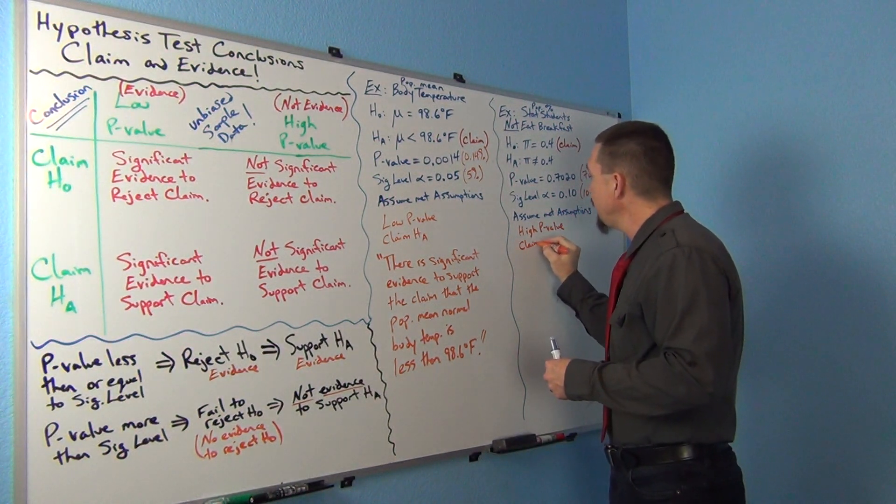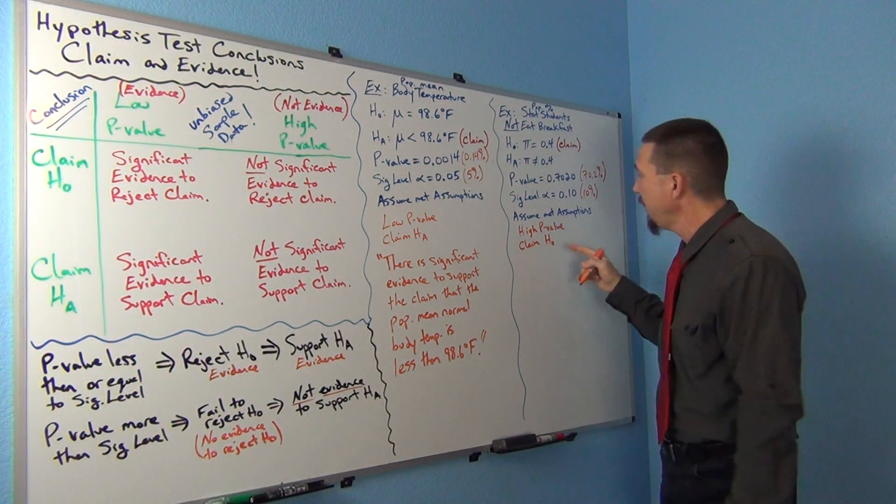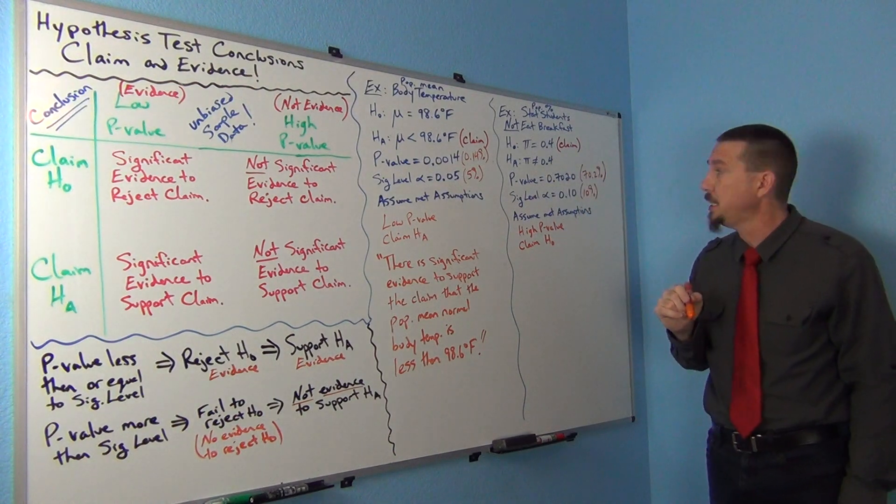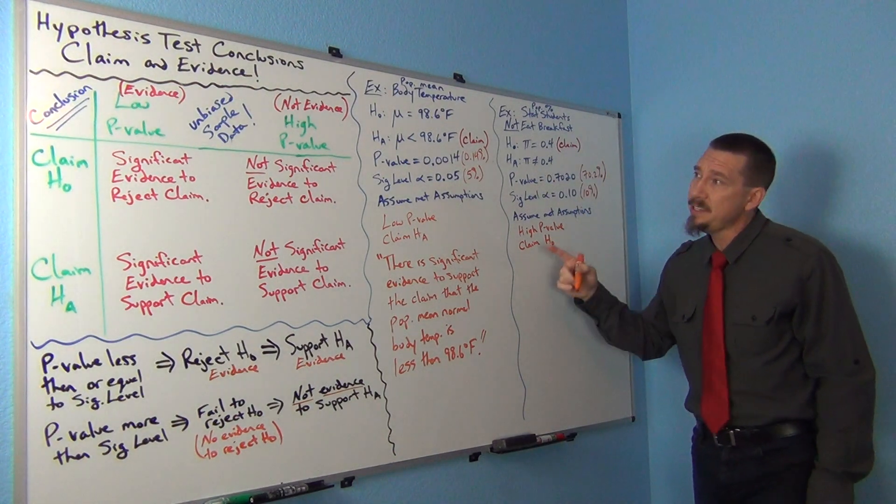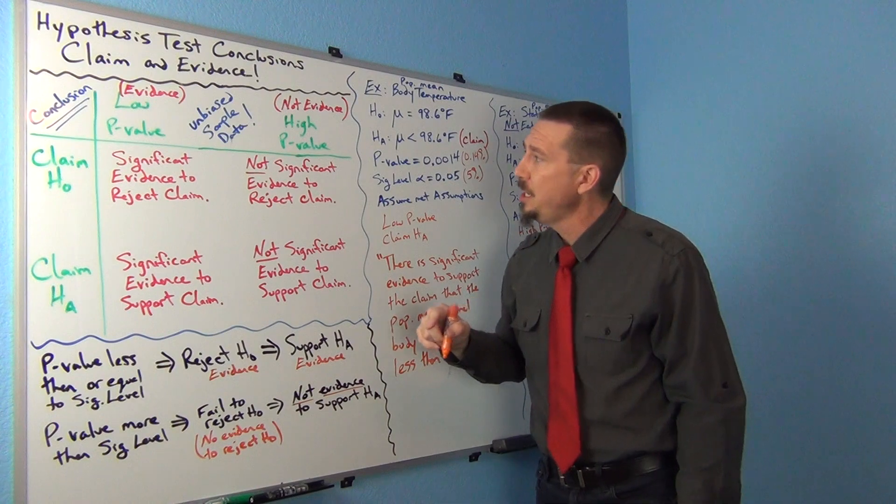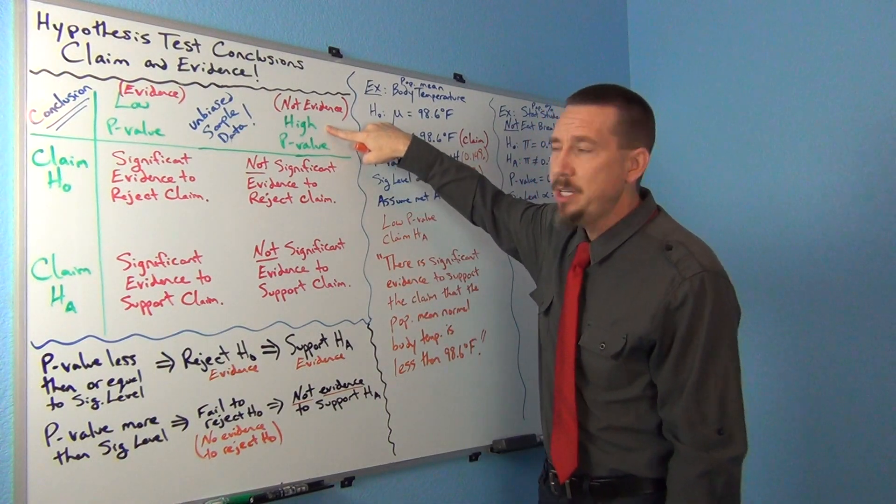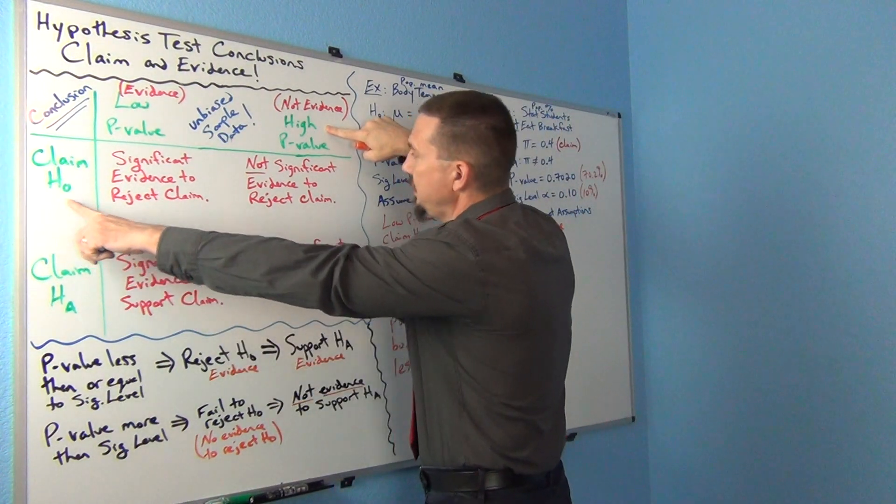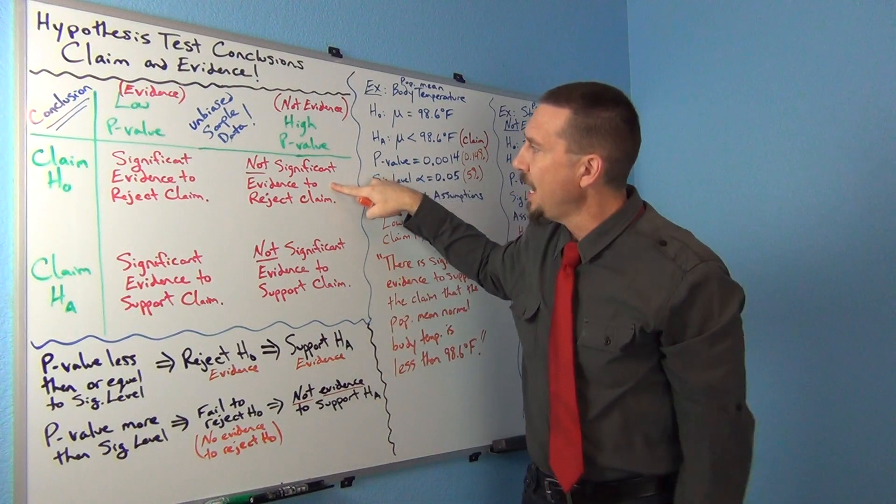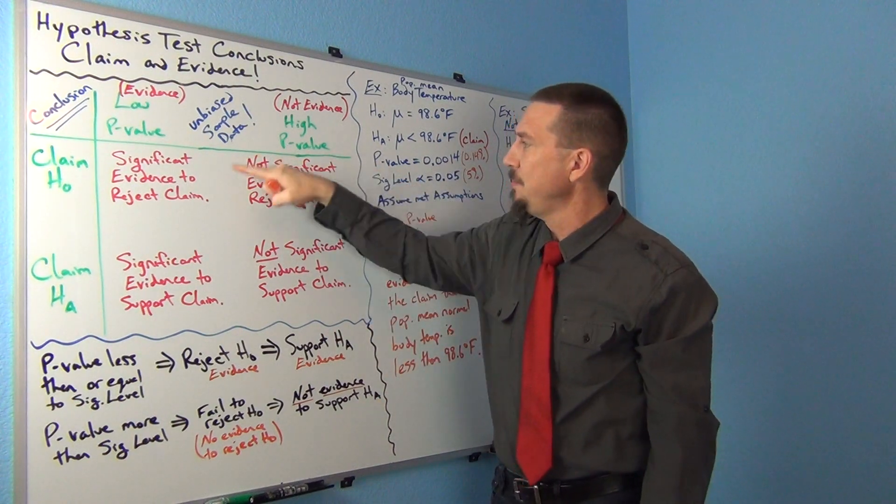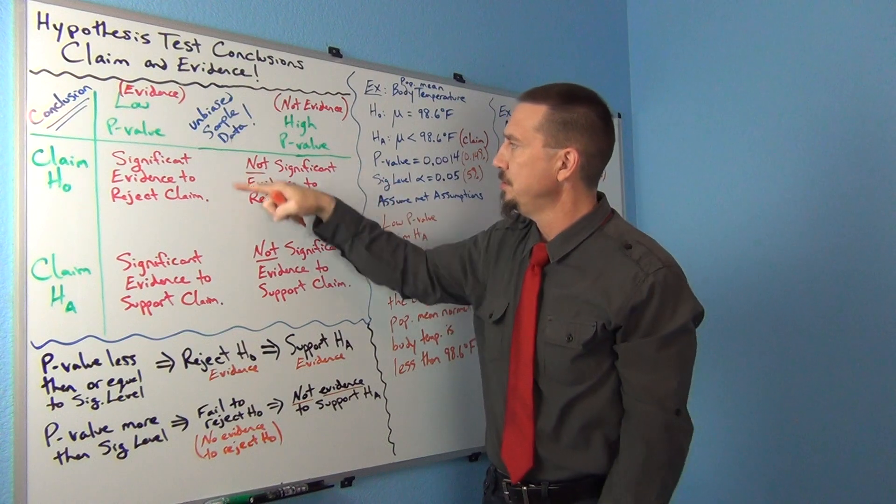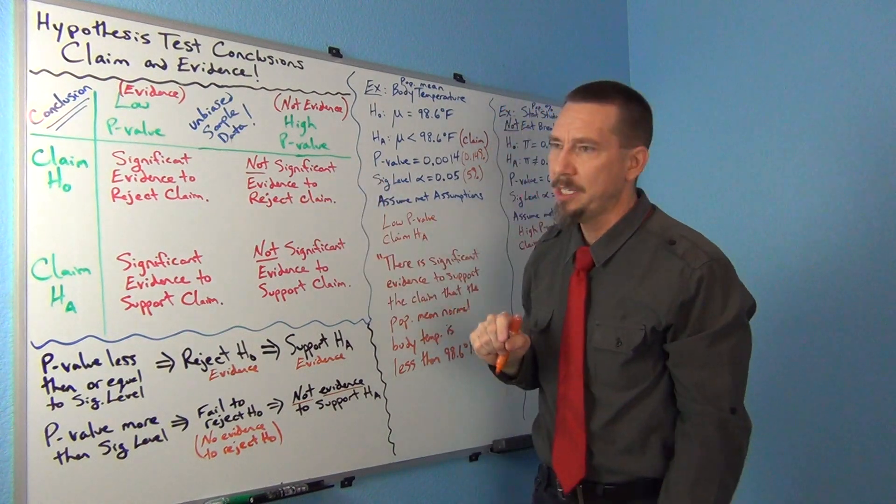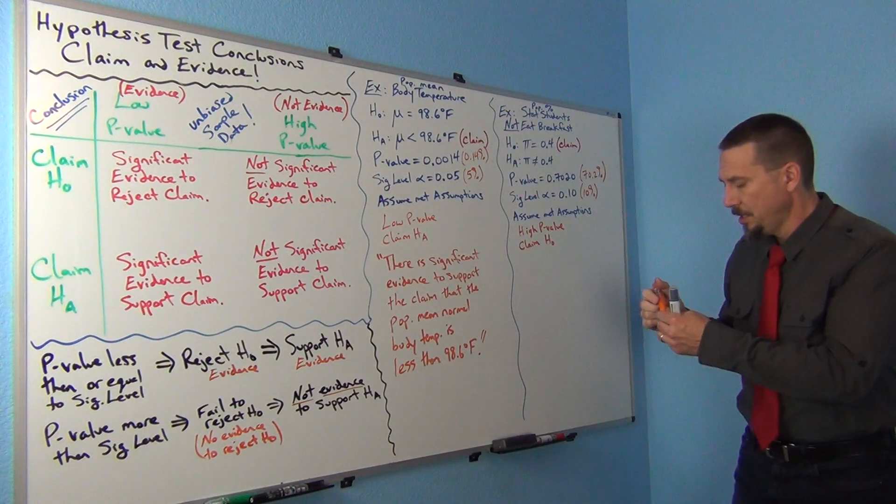And the claim was the null hypothesis, right? I used equal to 0.4 as my claim. So in this case, again, I'll just go back over to the chart. I have a high p-value, and the claim was the null hypothesis. So there's not significant evidence to reject the claim. That would be my conclusion. There's not significant evidence to reject the claim.